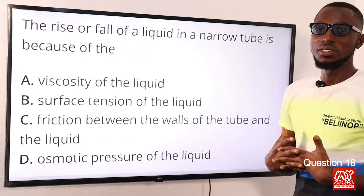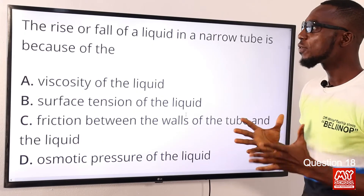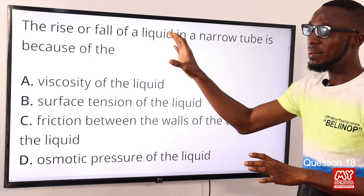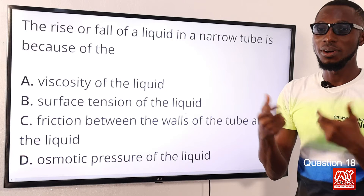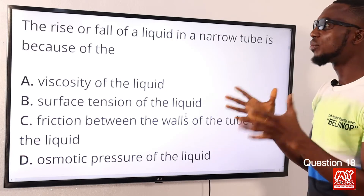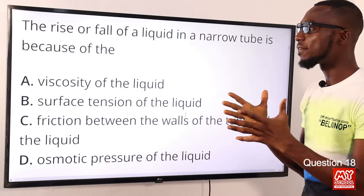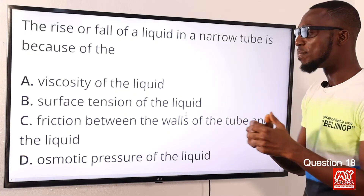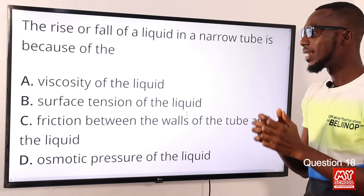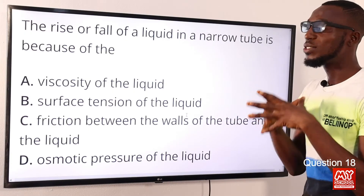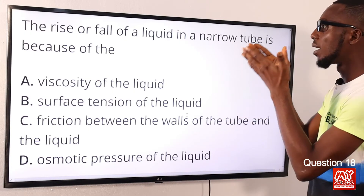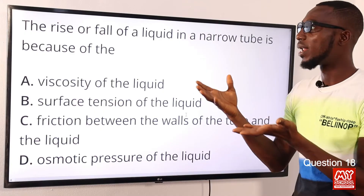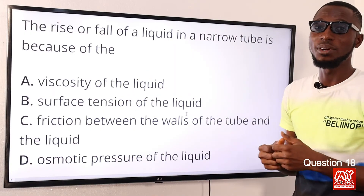Question 18: The rise or fall of a liquid in a narrow tube is because of what? The concept described here is capillarity or capillary action. This is a combined effect of cohesion, adhesion, and surface tension. Looking at the options, surface tension of the liquid is mentioned in option B, which is one of the combined effects giving rise to capillary action. So option B is the correct option.